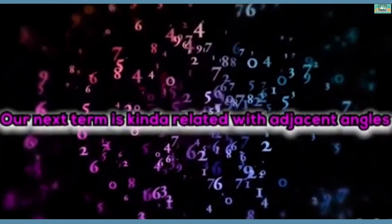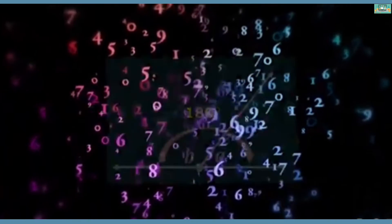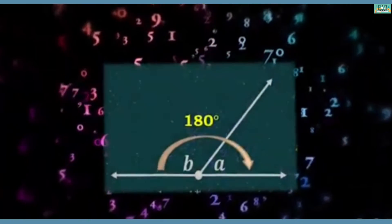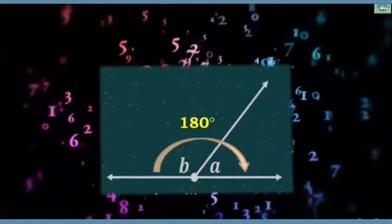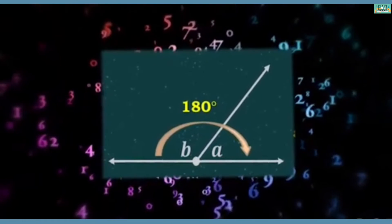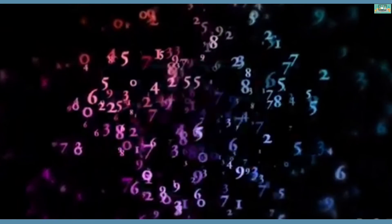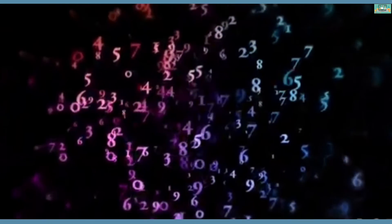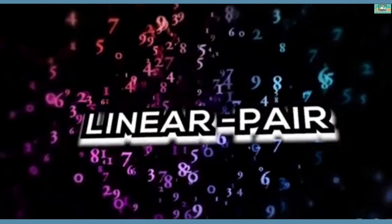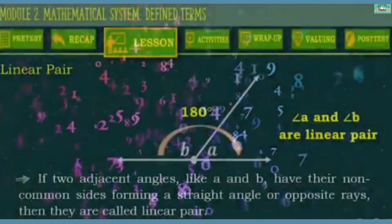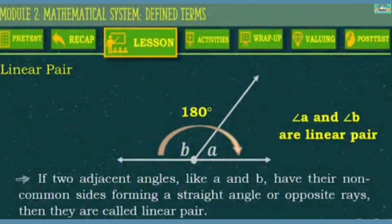Our next term is related to adjacent angles, but what is the difference? As you can see, their non-common sides form a straight line or opposite rays, and their sum is always 180 degrees. This figure is what you call a linear pair. A linear pair is two adjacent angles whose non-common sides form a straight angle or opposite rays.